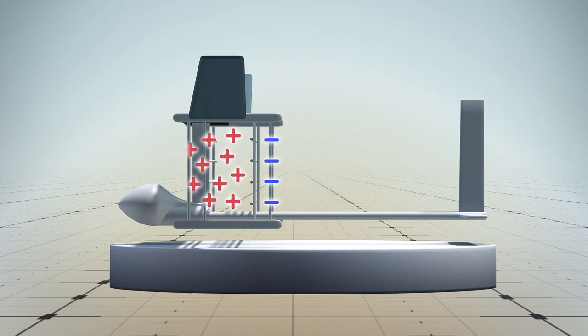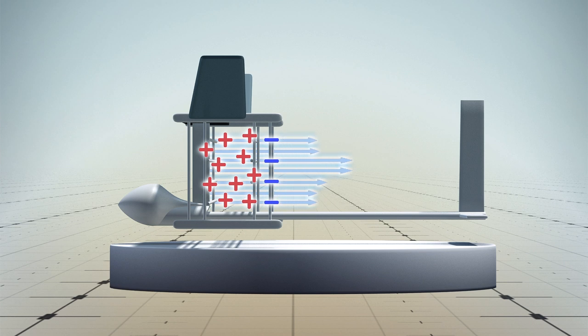As the ions move to the back row, they collide with neutral air, pushing it behind the glider and generating thrust, driving the aircraft forward. This air is called ionic wind.